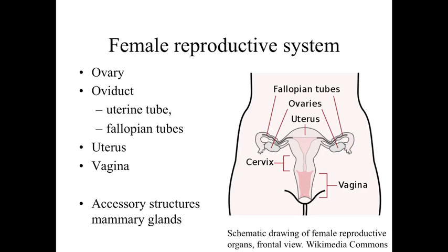If we take a look at the female reproductive system, we're going to see a series of structures involved both with the production of hormones as well as specialized structures for supporting and nurturing the development of the infant through the embryonic and fetal stages, as well as accessory structures such as the mammary glands. We'll be looking at the ovary, the oviduct — also called the uterine tubes or fallopian tubes — as well as the uterus, vagina, and the mammary glands.